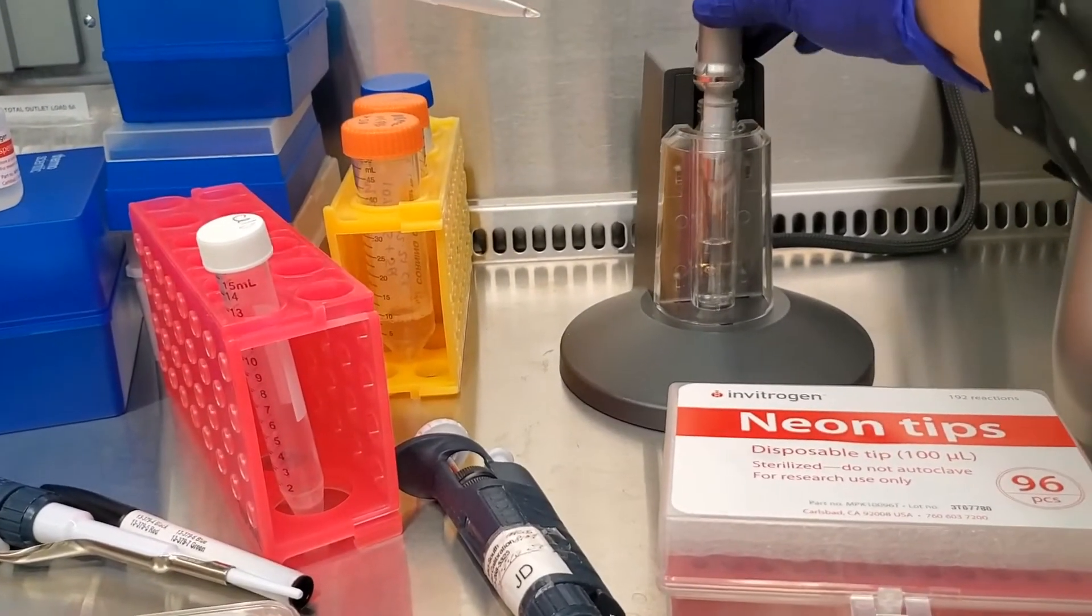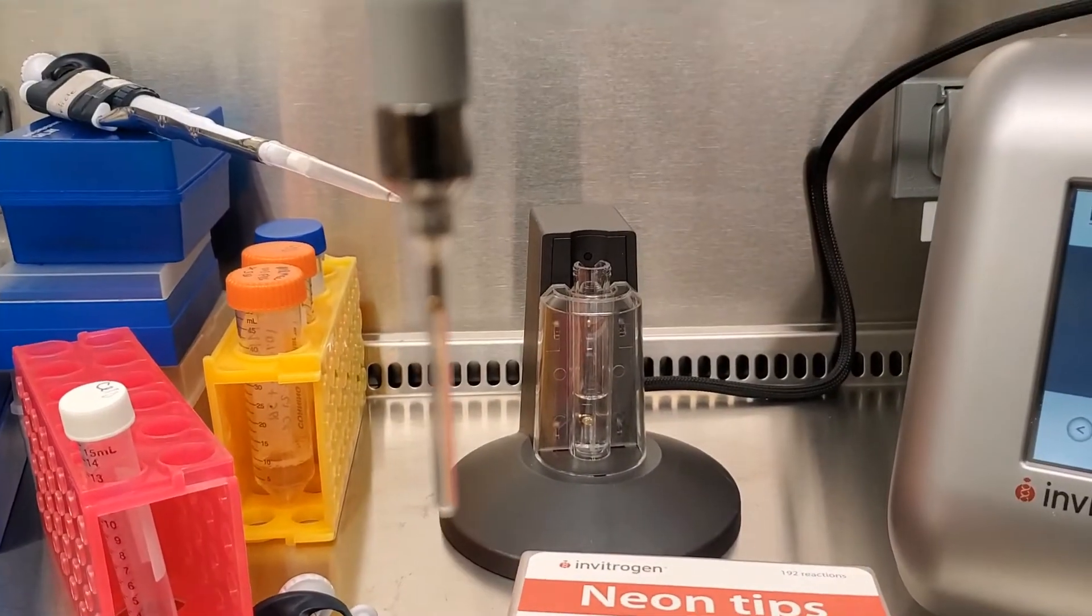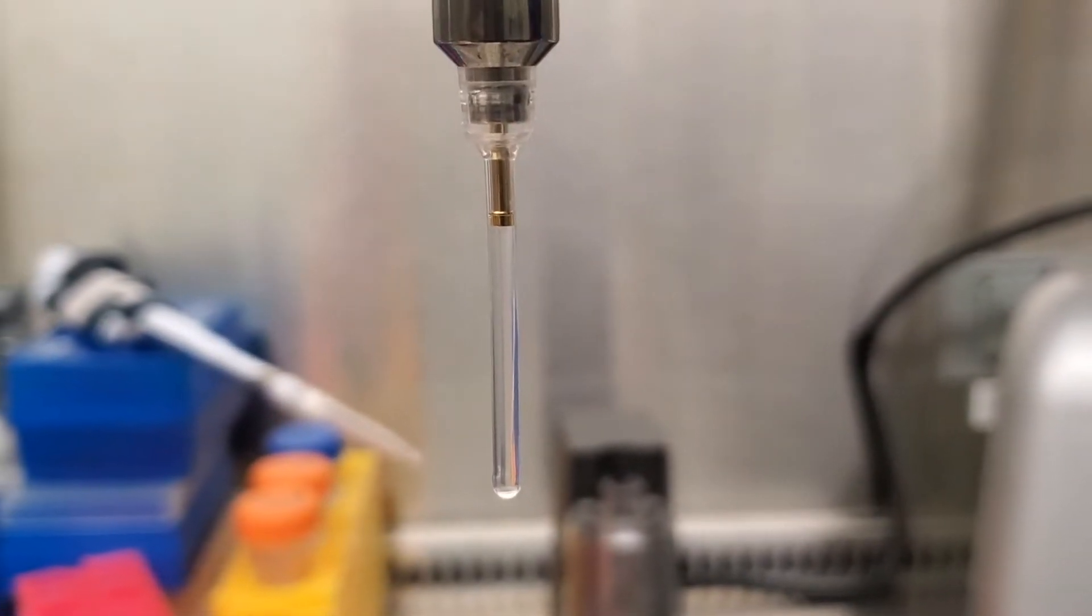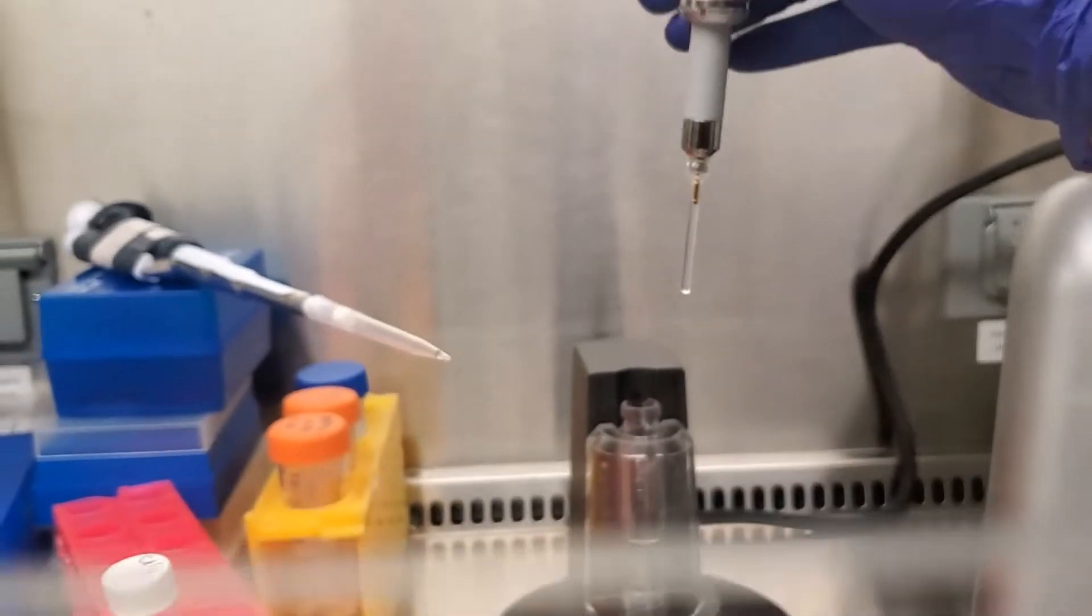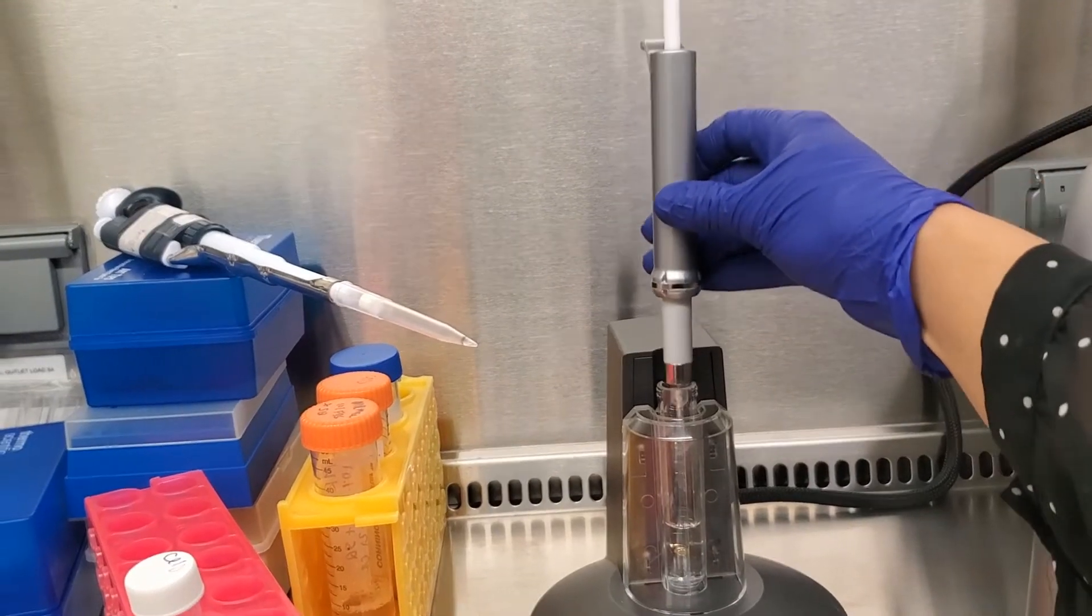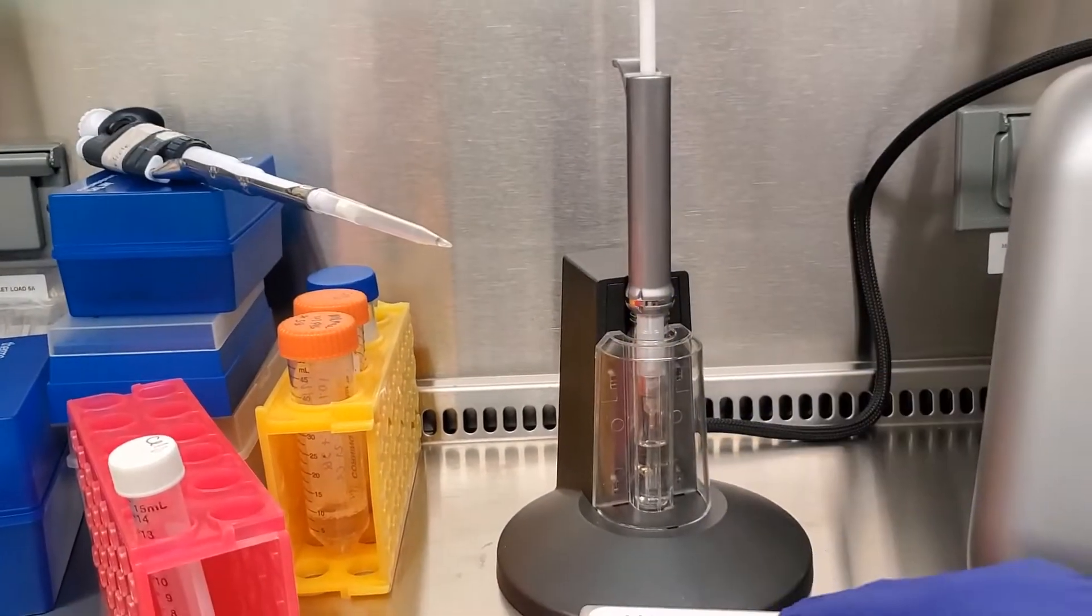I'm using the 100 microliter pipette tip. Note how it's all the way in the top and there's no bubbles whatsoever. This goes really quickly. You see that little hinge - make sure that it's facing back so you can see how that looks.